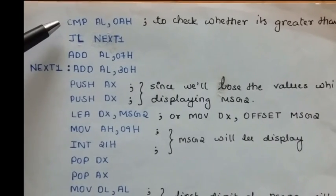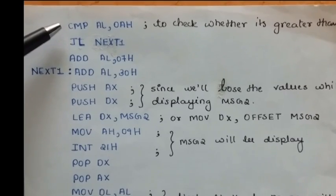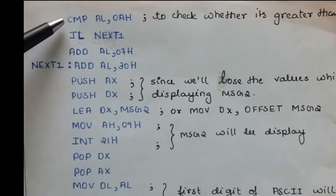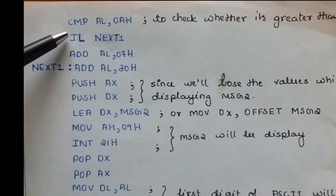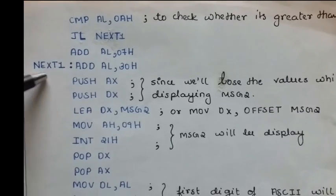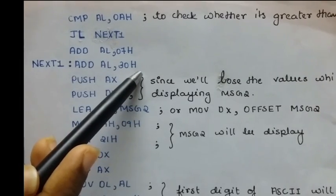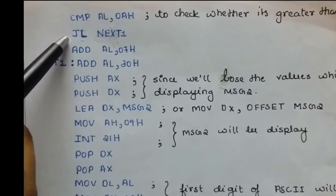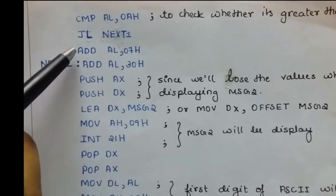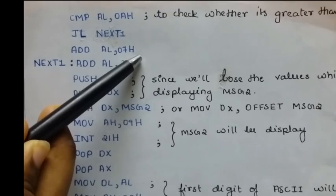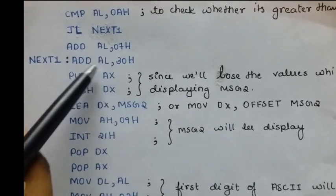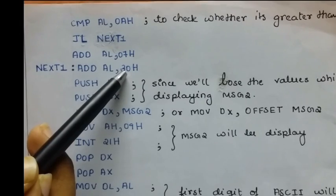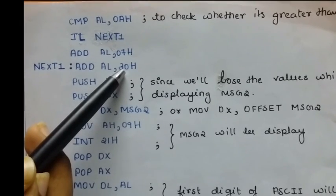After getting the first digit of the ASCII value, we will have to compare it with 10. This is done according to the rule of ASCII. If the number is less than 10, it will go to label next 1. That is in label next 1, we just add 30h to the number. If it is greater than 10, then this particular condition is not satisfied. So, it goes to the immediate next instruction. That is add al,07h. Now, 7 will be added to the number and then this particular command that is adding 30h will be executed. So, in total, first 7 will be added to the number and then 30 will be added to it.